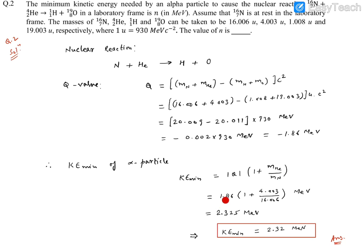So now you can put the value. This is 1.86 and this number is 1 plus 4.003 divided by 16.006 mega electron volt. After calculation, this term came out to be 2.325 mega electron volt. We need to truncate this in two decimal places, so you can truncate it like 2.32 mega electron volt. So that becomes the response for the second question.